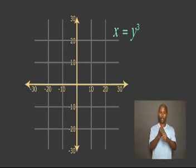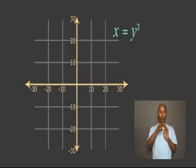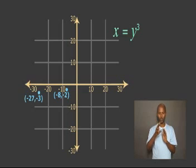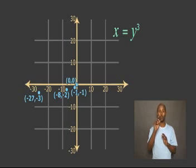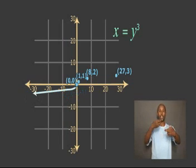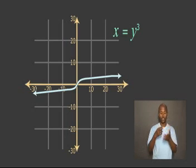Therefore, if we make a table of values, the values of X and Y will be transposed. The coordinates of the inverse of R are: negative 27 and negative 3, negative 8 and negative 2, negative 1 and negative 1, 0 and 0, 1 and 1, 8 and 2. The graph of the inverse relation should look like this. Teacher, please check the students' graphs after the lesson to be sure that we all understand inverse relations.